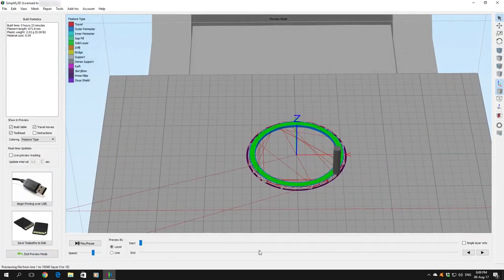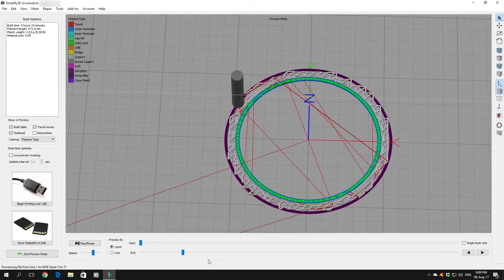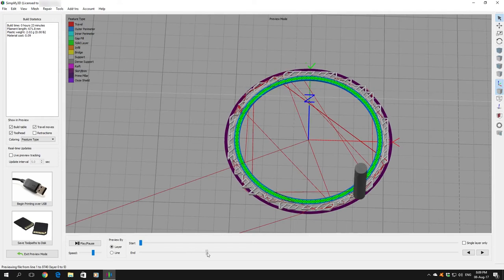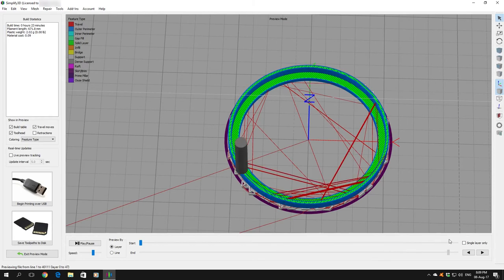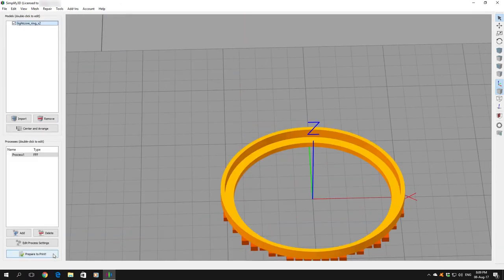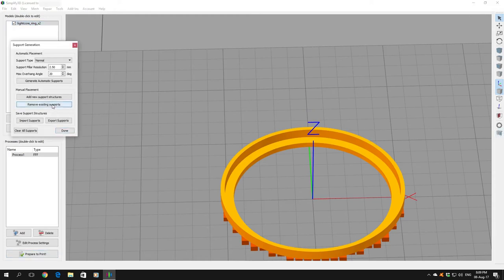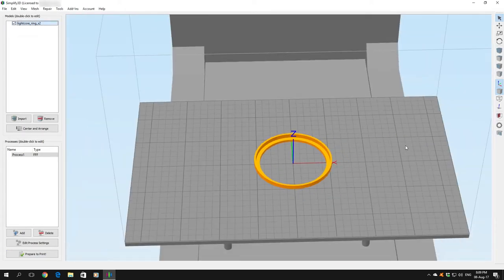So as you can see. Here we go. There's the support structure. And as the print goes on. It builds up on the base. And then the walls print. And while it printed fine. It did it's job. It didn't look very pretty on the underside. Once I realised my mistake. I went back. Removed existing support structure. There we go. And then I flip the model so this part was touching the base.